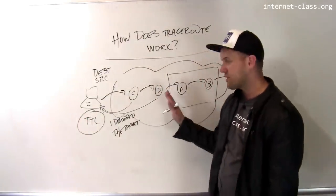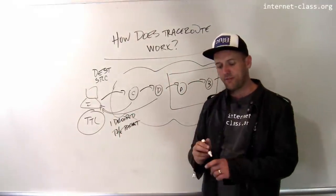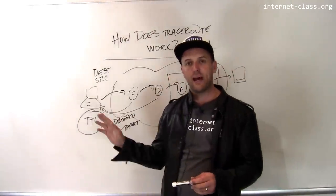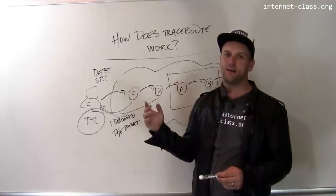But this is how traceroute works. It's pretty clever. It exploits the time to live field in order to find out the path between a source and a destination.